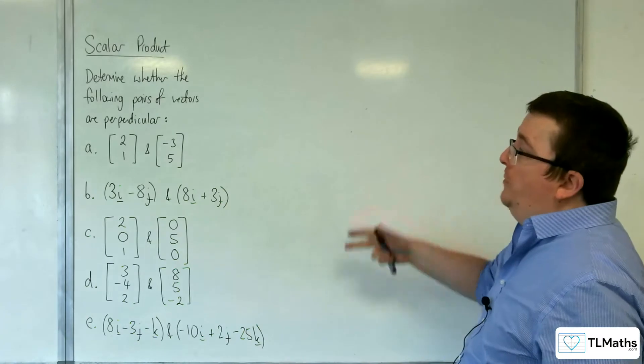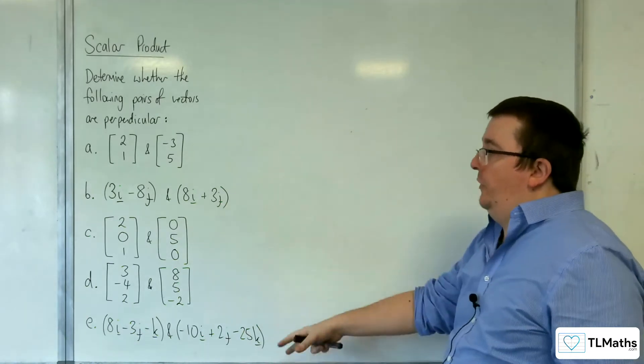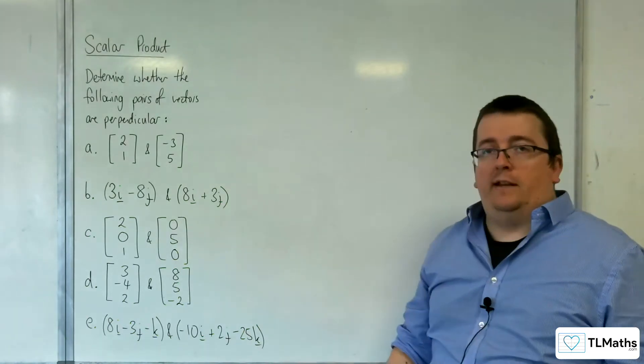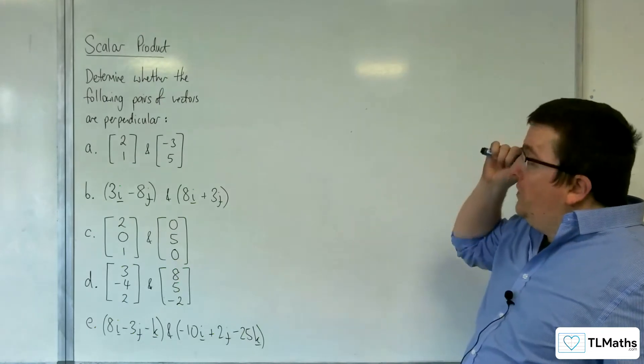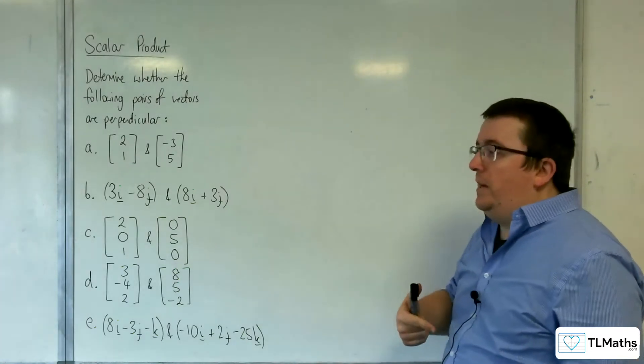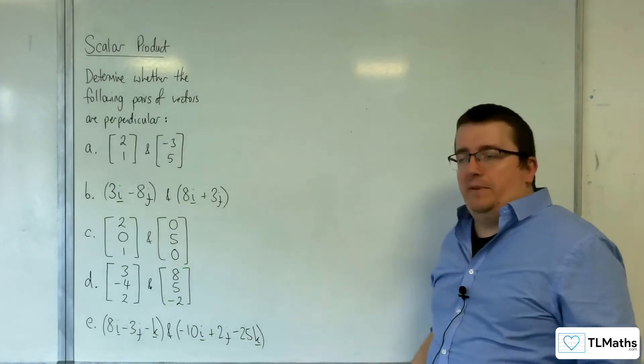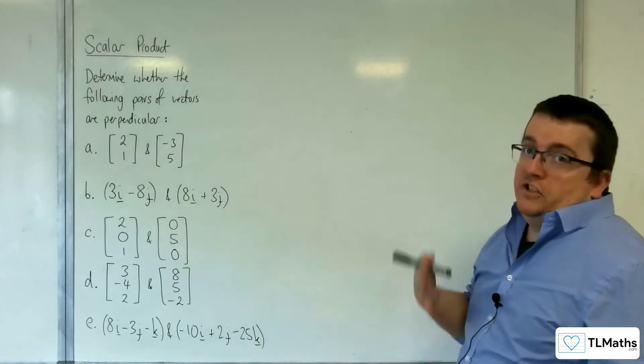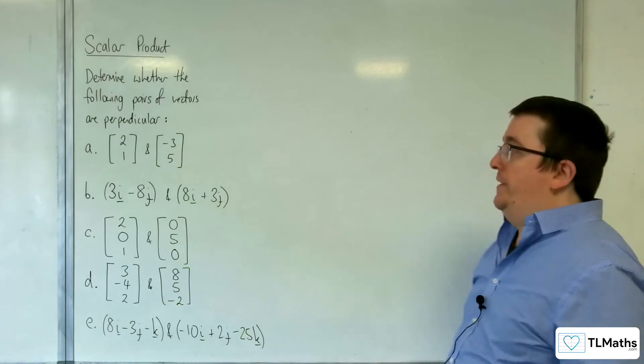In this video, we're going to be determining whether the following pairs of vectors are perpendicular or not. We can do this very easily by just looking at the scalar product. If the scalar product gives us 0, they are perpendicular. If the scalar product is non-zero, they're not perpendicular.